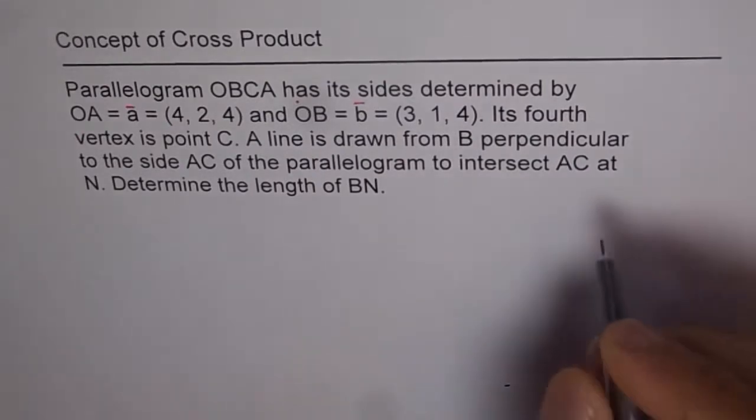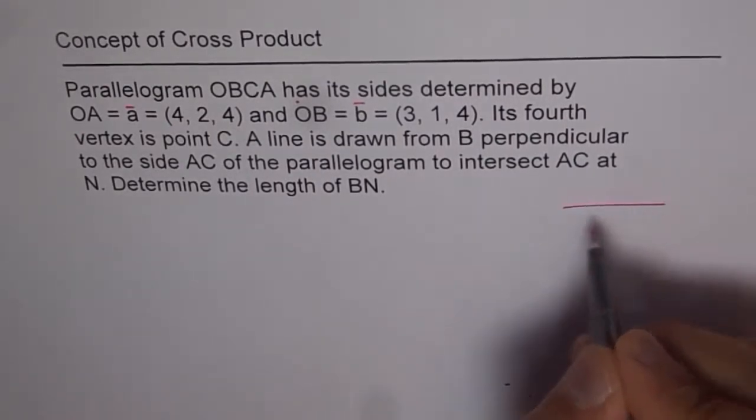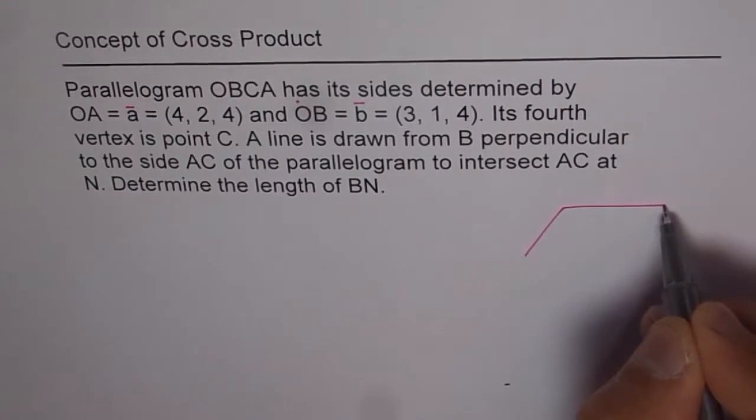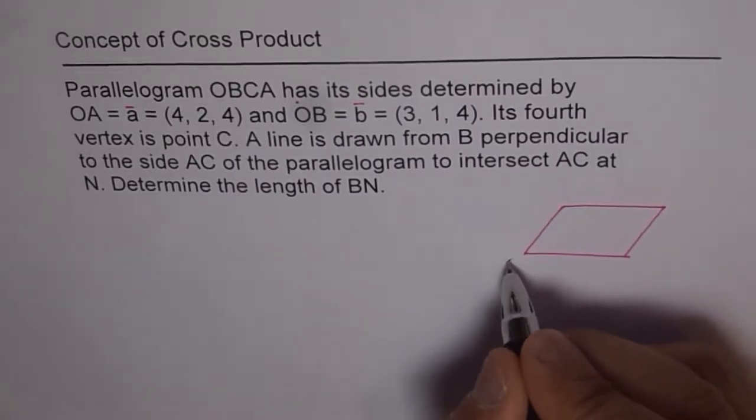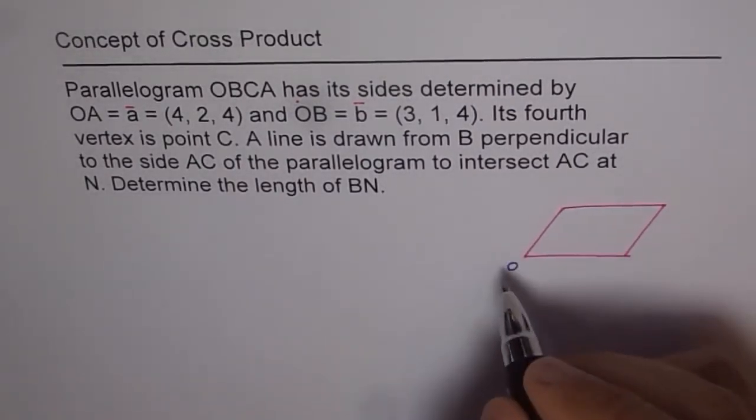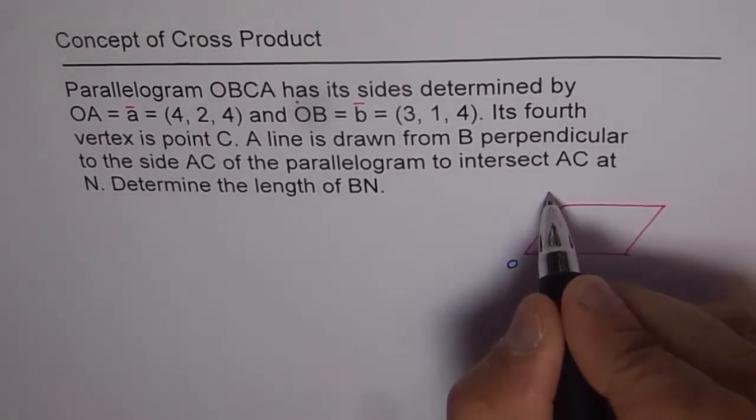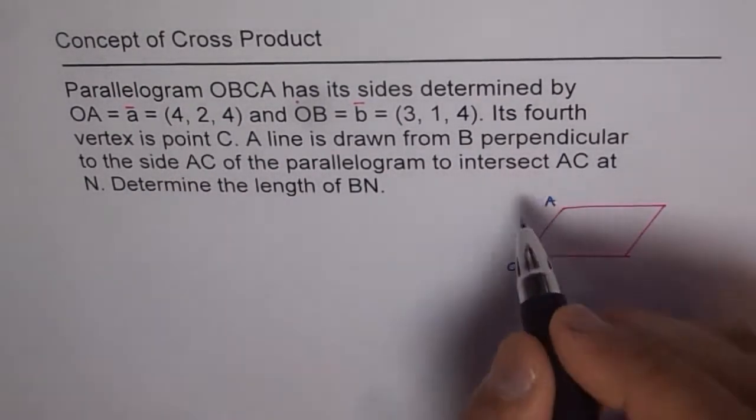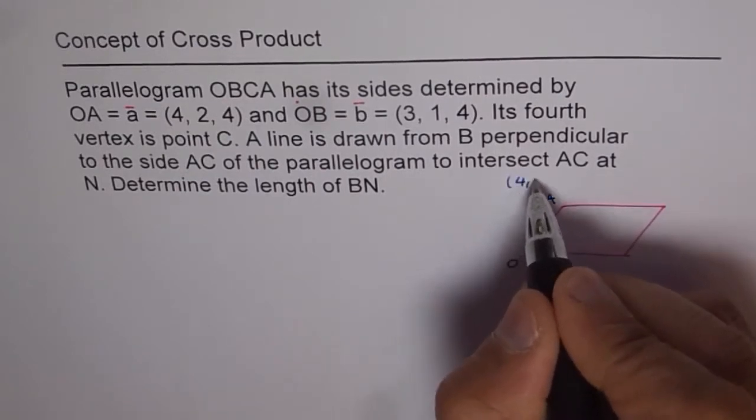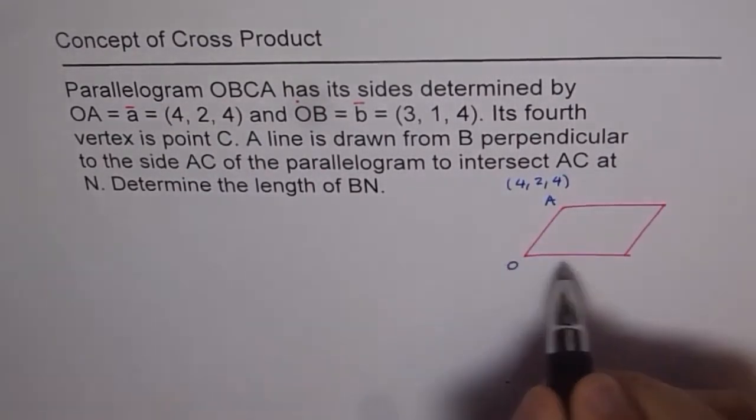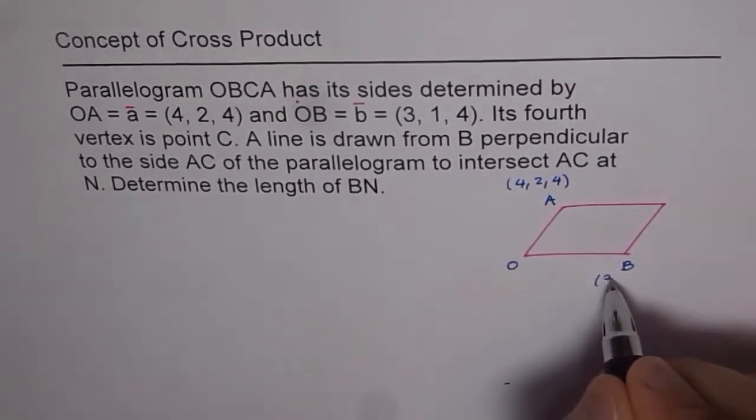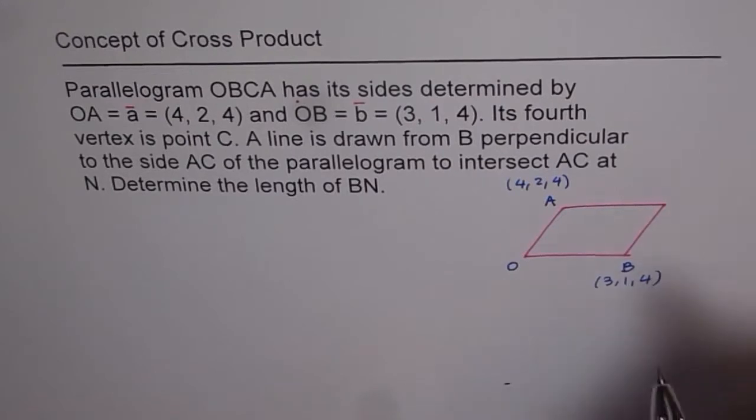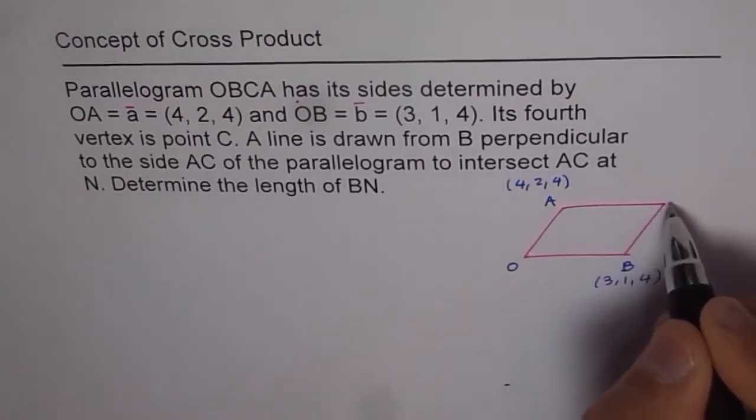Now, what we have is let's make one parallelogram first. We'll label it as given in the question. So this is the origin, and from origin we have OA, and the coordinates for A are (4, 2, 4). Then we have OB, and the coordinates for B are (3, 1, 4). And the other vertex is C.